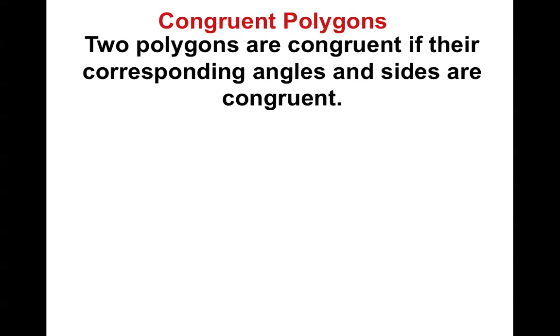Basically, two polygons are congruent if their corresponding angles and sides are congruent as well.